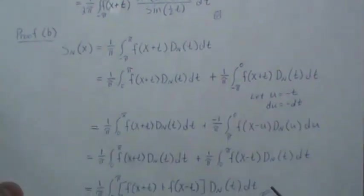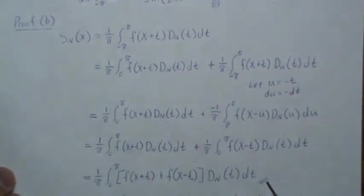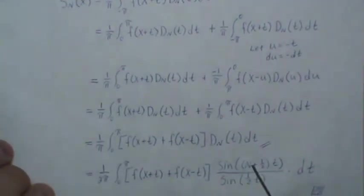If we take this negative and flip the order of integration, and since du, the u is a dummy variable, we're going to change that to t, then we get this.